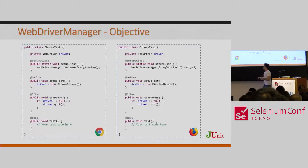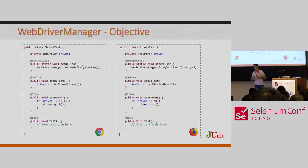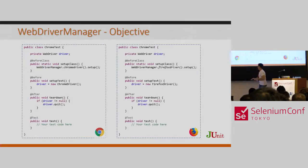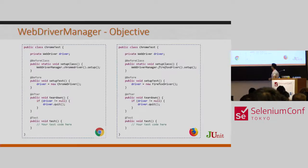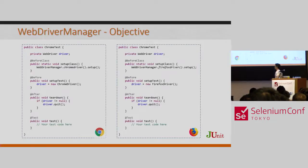In our tests, we exercise our system under test and verify whatever we need, and so on. At the end, we quit — we close the browser and we are done. The other example is the same but for Firefox. We call WebDriverManager.firefoxDriver() to automatically manage the GeckoDriver. This is the basic way in which WebDriverManager works.